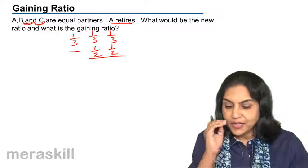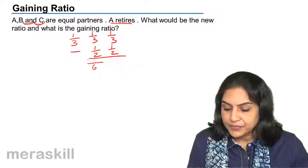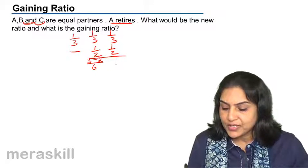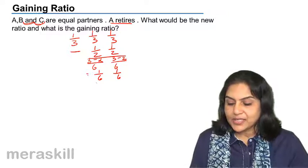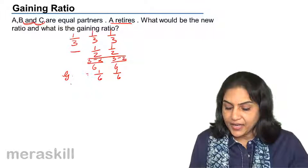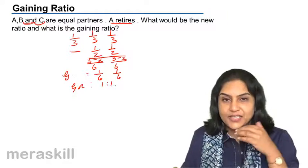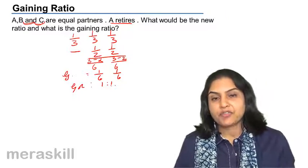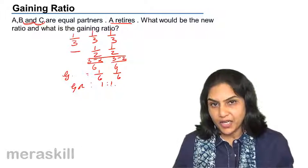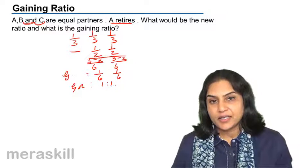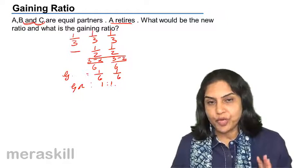However, we can just confirm this. Half minus one third, with denominator 6, gives 3 minus 2, and similarly here the same thing, 3 minus 2. So it is 1 by 6 and 1 by 6. This is the gain, and the gaining ratio is 1 is to 1. Just like in the case of admission, in case of retirement and gaining ratio, if the old ratio between the remaining partners and the new ratio of the remaining partners is the same, the gaining ratio will also be the same.